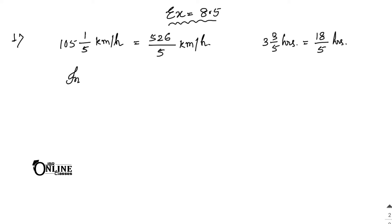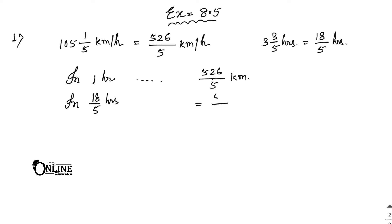In one hour the car covers 526/5 kilometer. So in 18/5 hours it covers 526/5 × 18/5 kilometer. Multiplying 526 by 18 gives 9468, so the distance is 9468/25 kilometer.